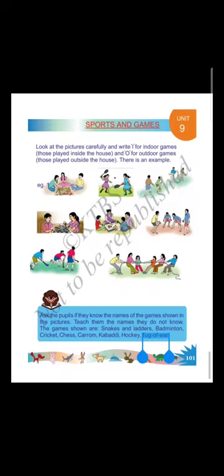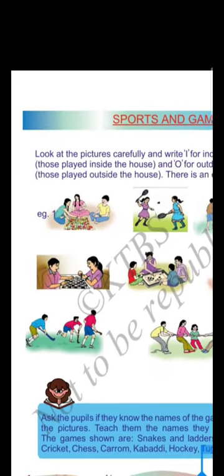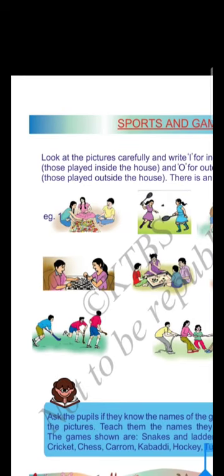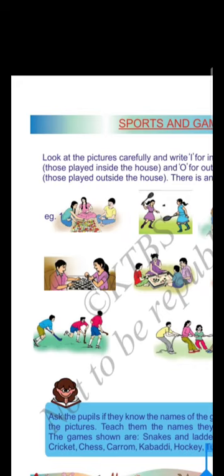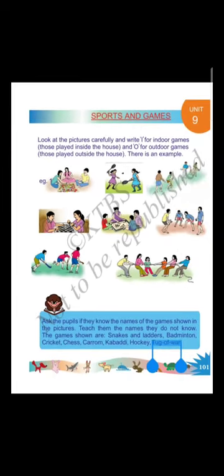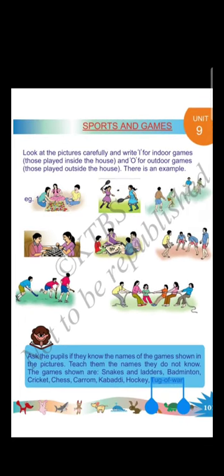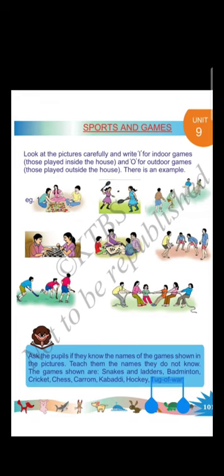You already know the indoor game and the outdoor game. They are giving some pictures of the games. Look at the pictures carefully and write I for indoor games — those played inside the house — and O for outdoor games — those played outside the house. You have to write I or O in that box.